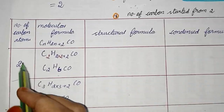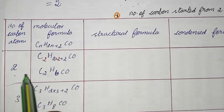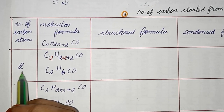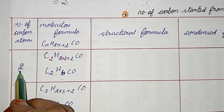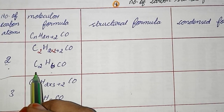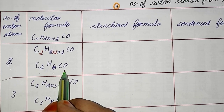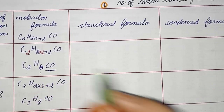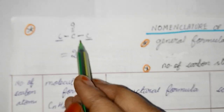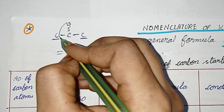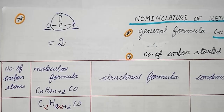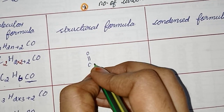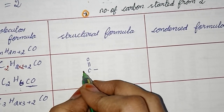Starting with N equal to 2. General formula CnH2n+2CO — substituting N=2, we get C2H6CO. For the structural formula, first we write the functional group: this is the structure of ketone, with C double bond O. This is one linking side, and this is the other linking side.